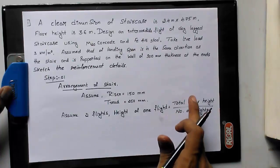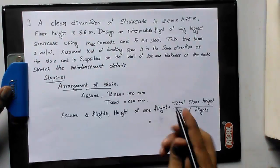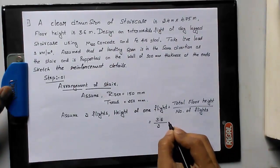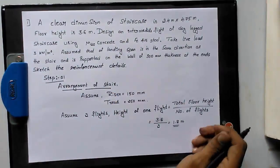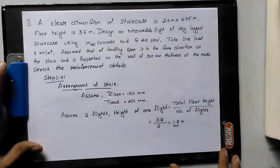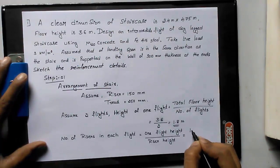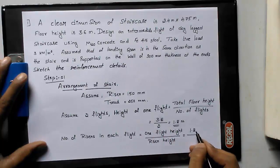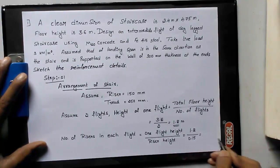Height of one flight equals total floor height divided by number of flights. The floor height is given as 3.6 m. Assuming 2 flights, height per flight = 3.6 / 2 = 1.8 m. Next, number of risers per flight = flight height / riser height = 1.8 / 0.15 = 12 risers.